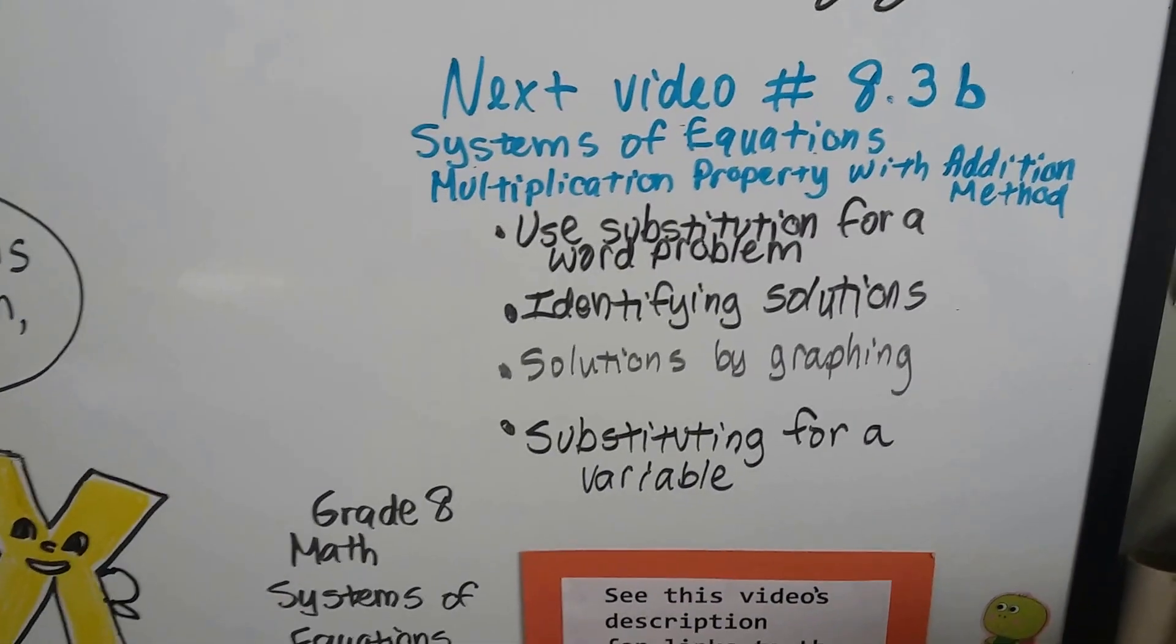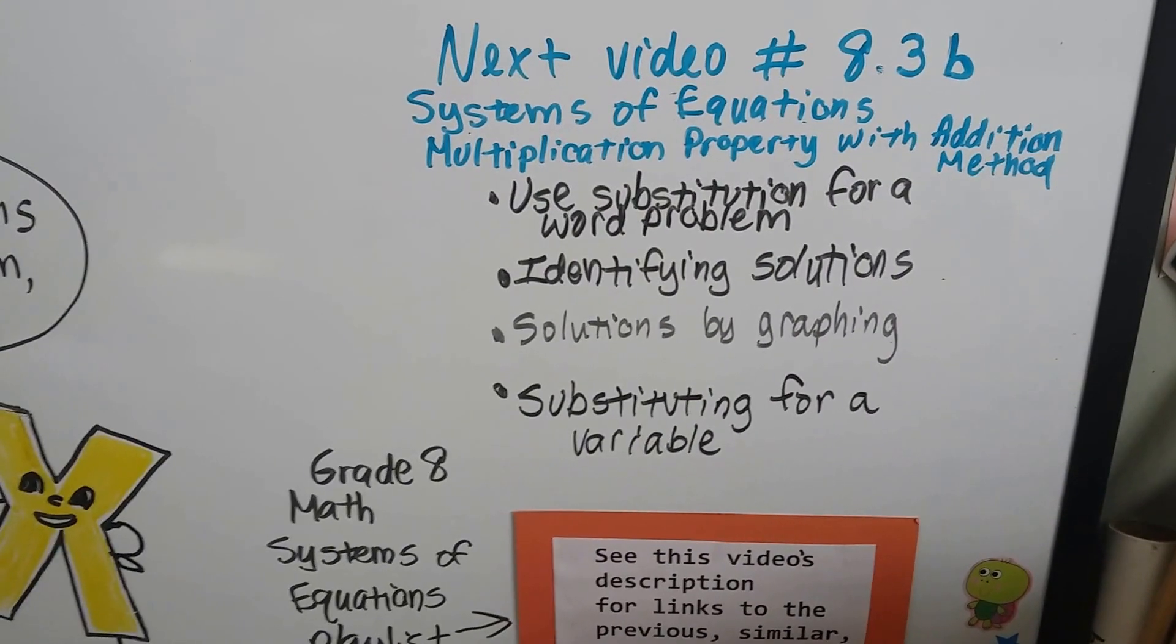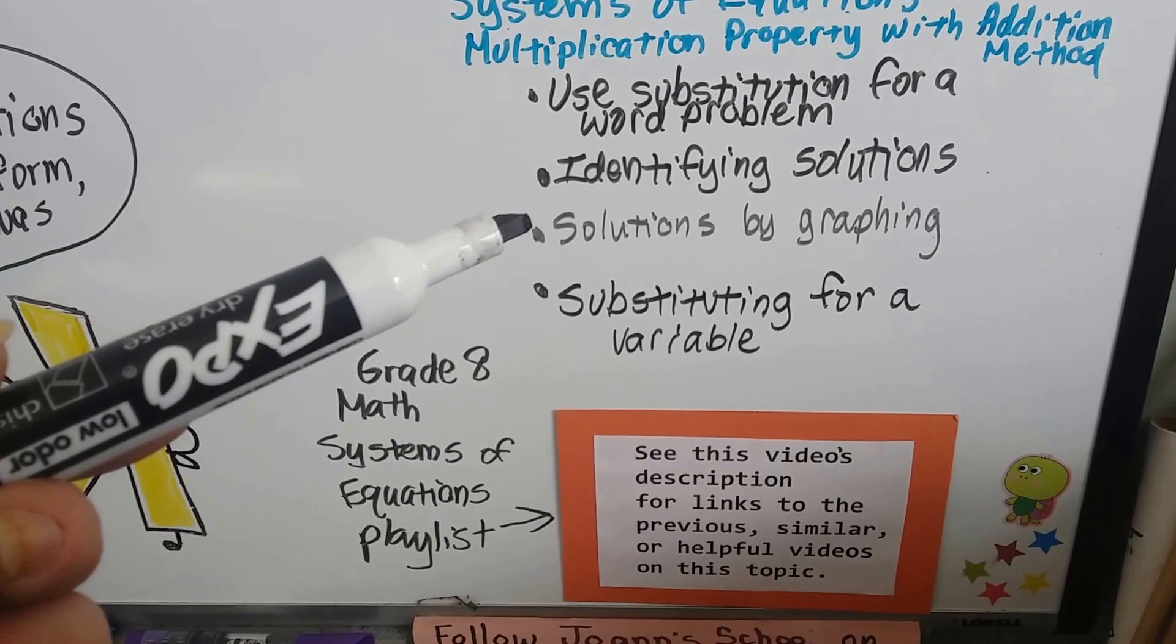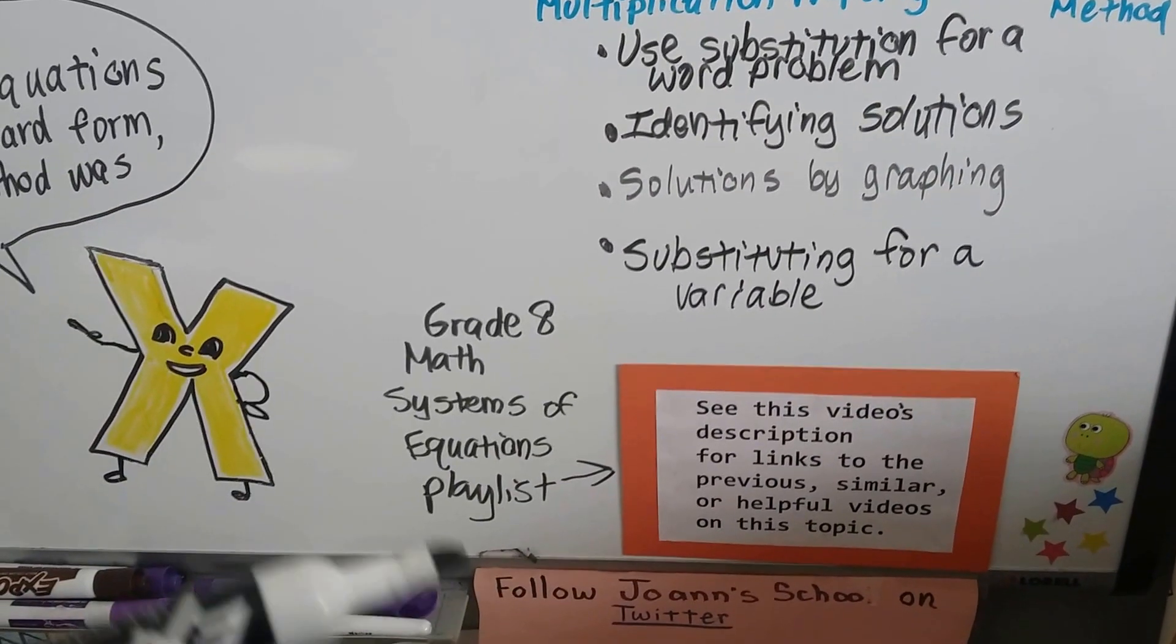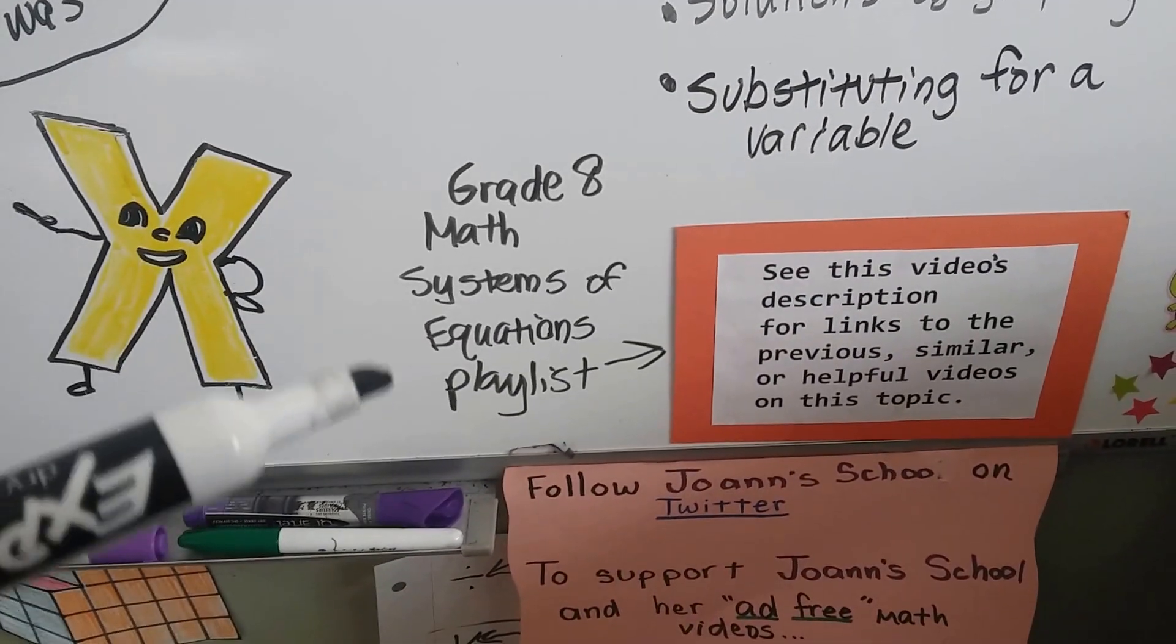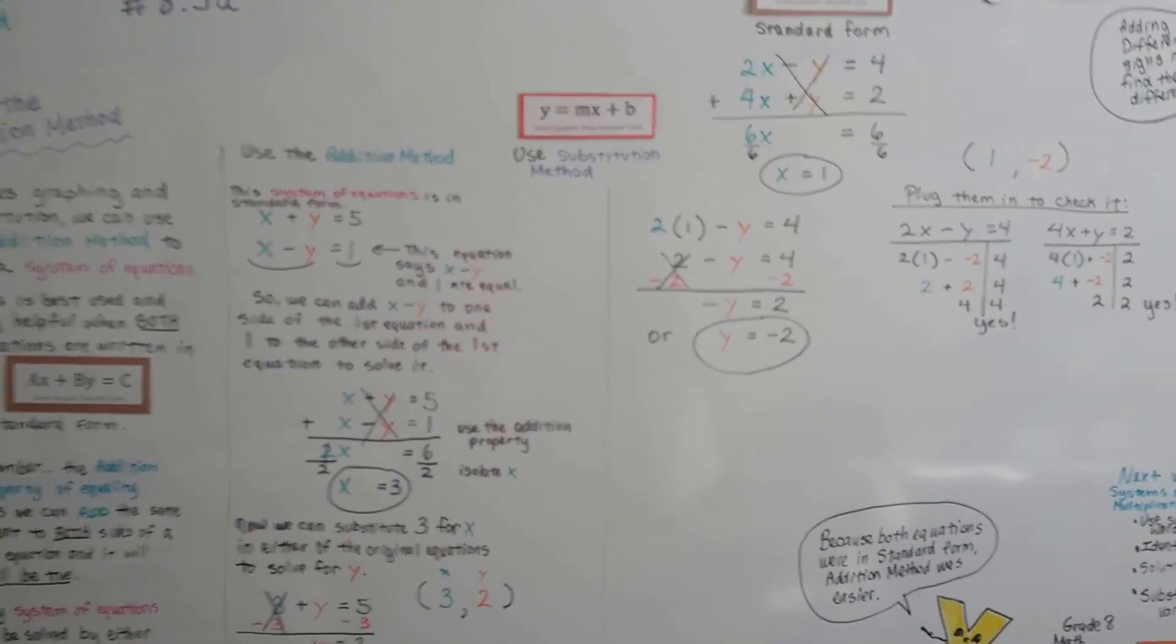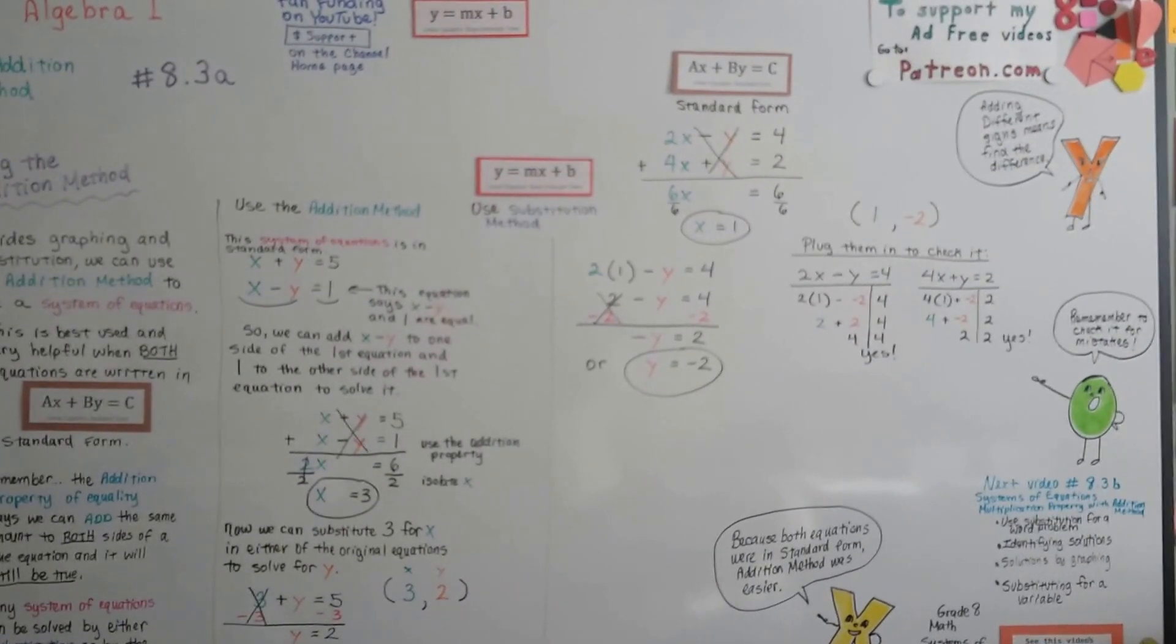Our next video is going to be 8.3b and we're going to talk about more systems of equations. We're going to talk about using the multiplication property with this addition method. If you want to see the link for using substitution for a word problem or identifying solutions for linear equations and solutions by graphing or substituting for a variable, and using the substitution method, there's going to be links in this description. I'm going to put a link to my grade 8 math systems of equation playlist because it talks about all of this too. Those videos are slightly different than these. I have different examples. So if you're really having trouble, you might want to watch both playlists about systems of equations and then you'll really know what's going on.